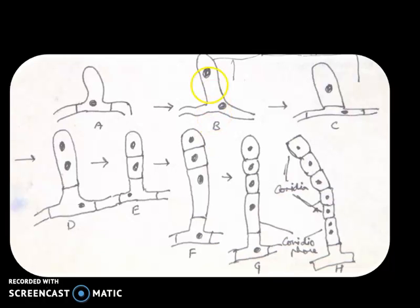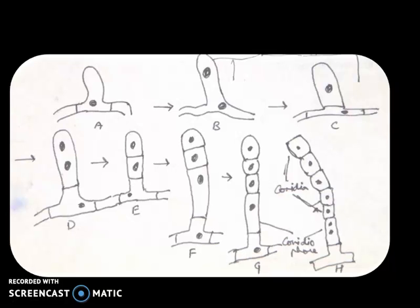When conidia starts forming, any cell will get differentiated into a cell which will initiate a conidiophore, as you can see in figures a, b, and c. It cuts off a vertical branch as seen in figures c, h, and g. This vertical branch acts like a conidiophore. The conidiophore will then start cutting off conidia in a basipetal manner — the most matured conidia will be at the top and the youngest at the bottom, as seen in figures h and g.